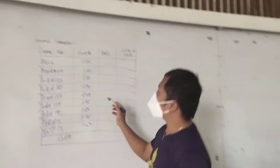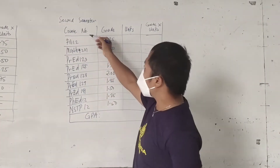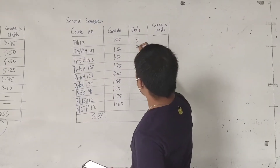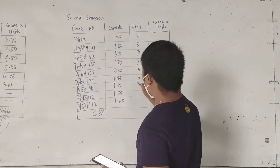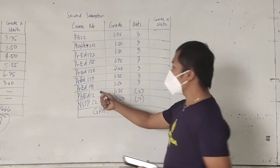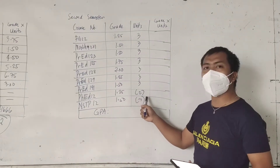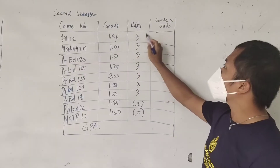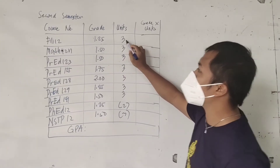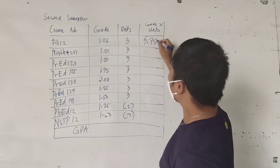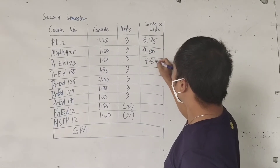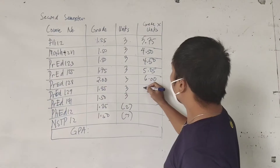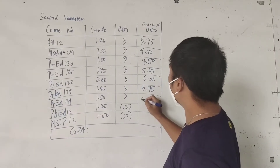Now let's proceed to the second semester. Same process. You have your course number, corresponding grade, and units. The units here are still 3 for most subjects, with some at 2 and one at 3. Again, Physical Education and NSTP are not included in the GPA computation. So you multiply grade times units: 1.25 times 3 is 3.75, then 4.5, 4.5, 5.25, then 6, 3.75, and 4.5.